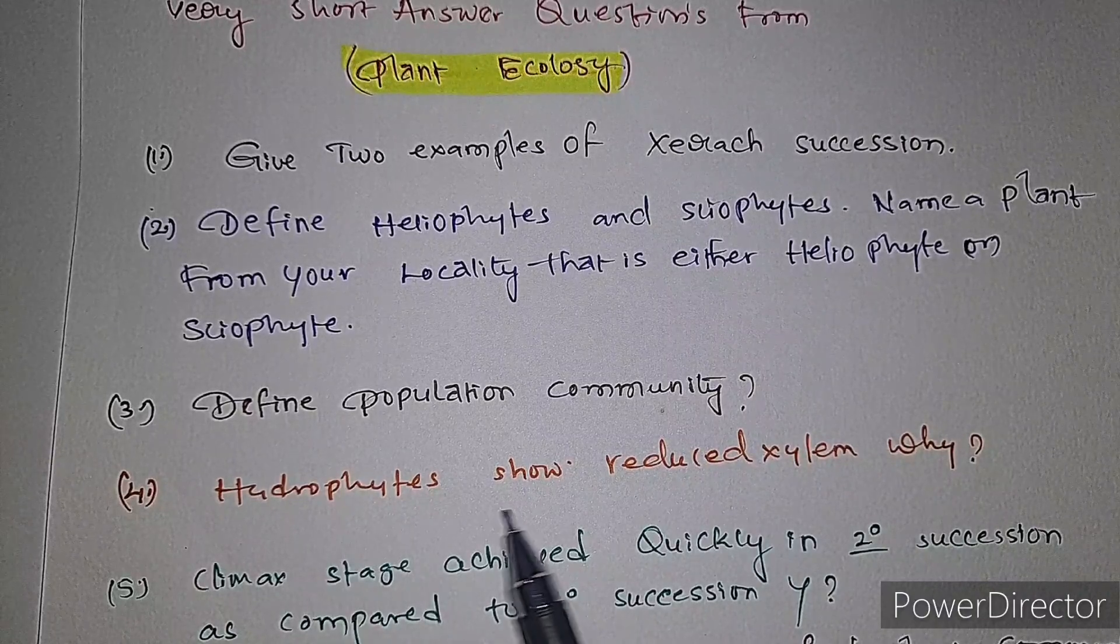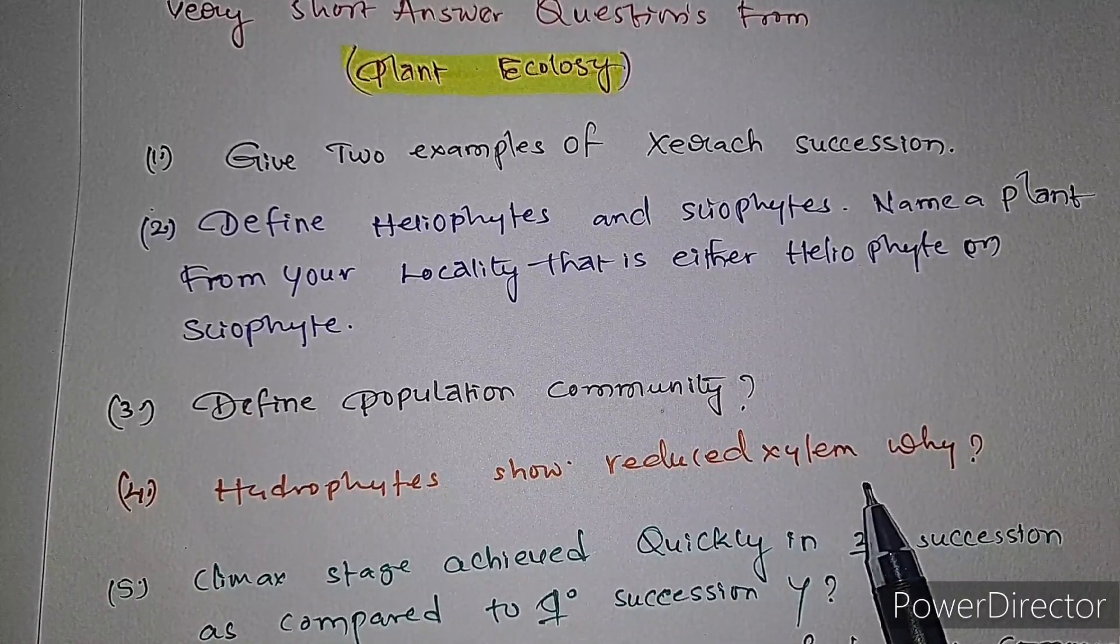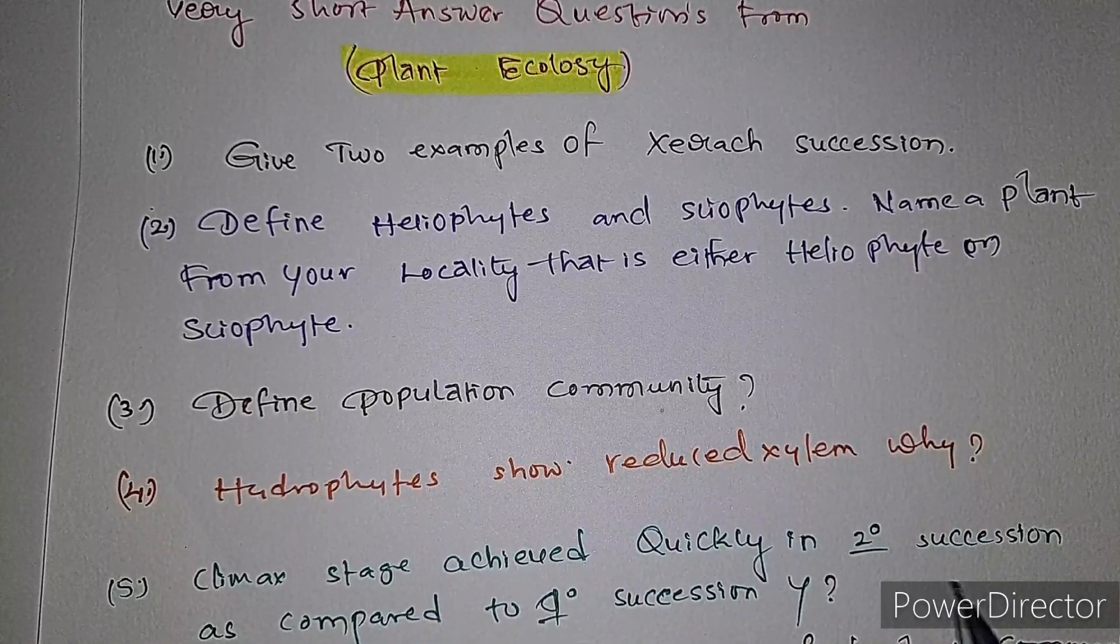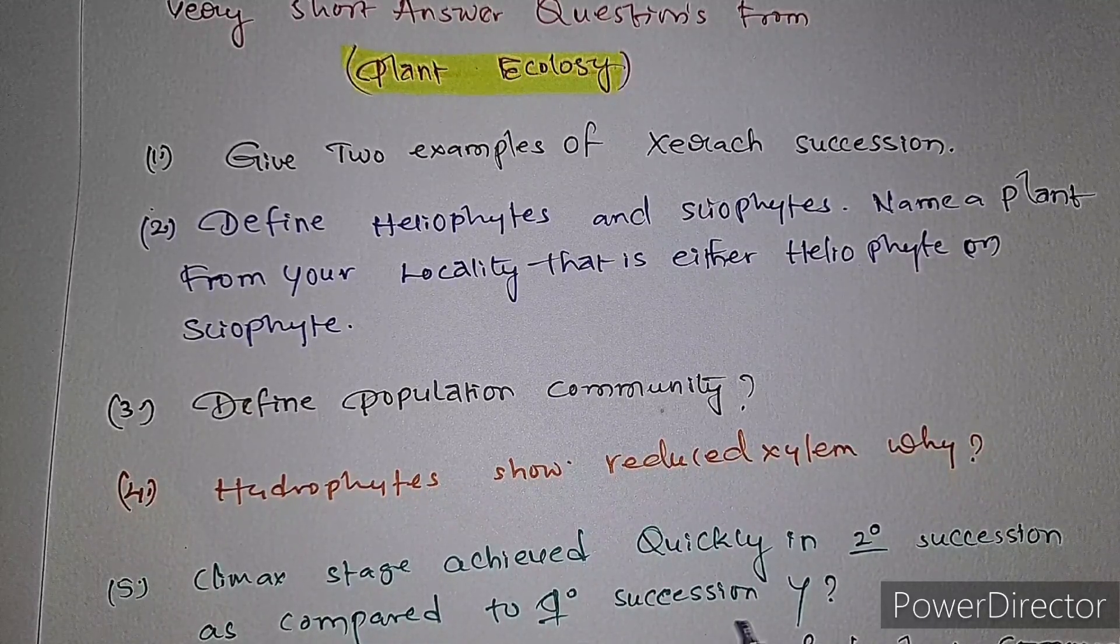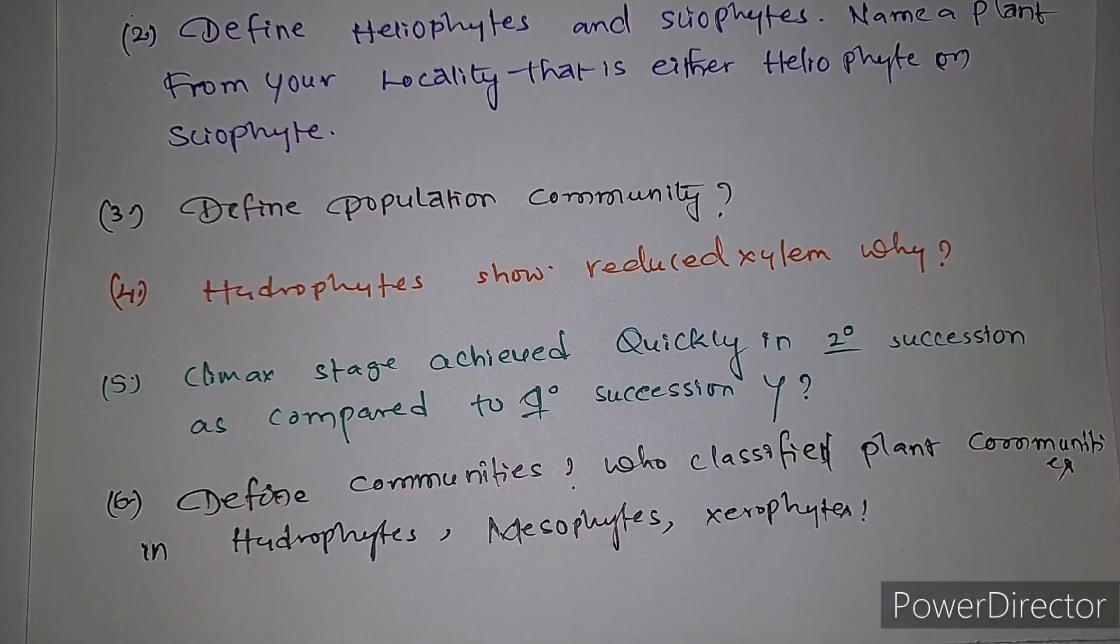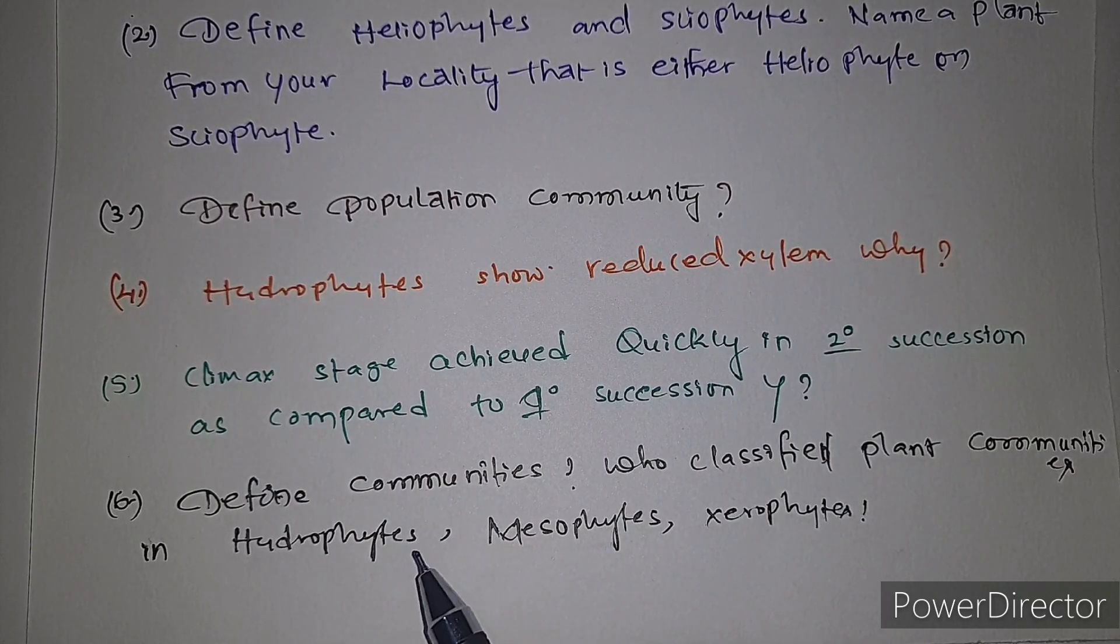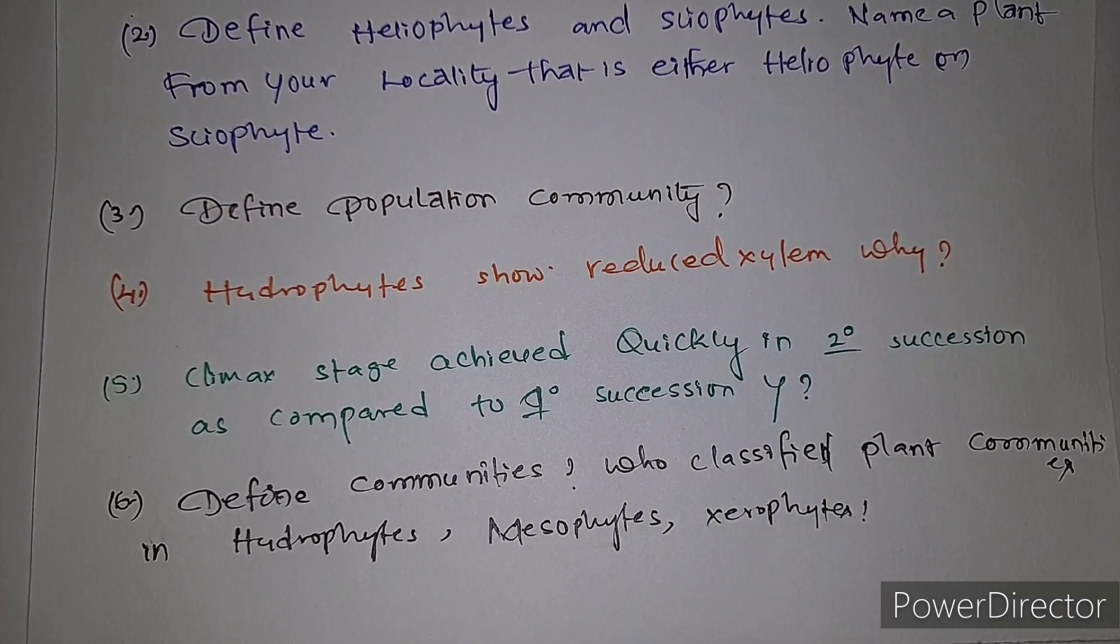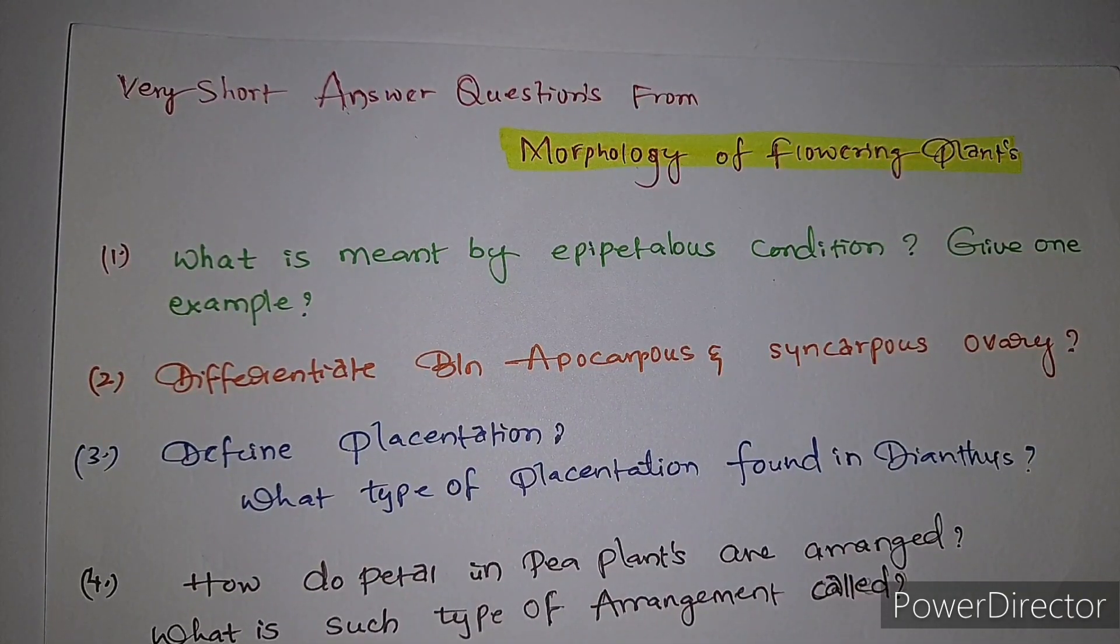Second question: define heliophytes and sciophytes. Name a plant from your locality that is either heliophyte or sciophyte. Third question: define population community. Fourth question: hydrophytes show reduced xylem, why? Fifth question: climax stage is achieved quickly in secondary succession as compared to primary succession, why?